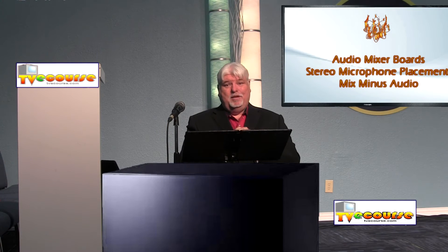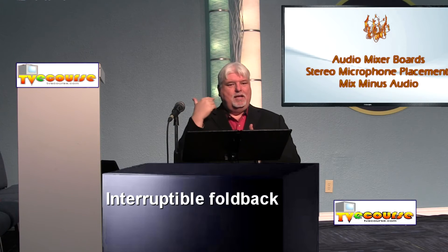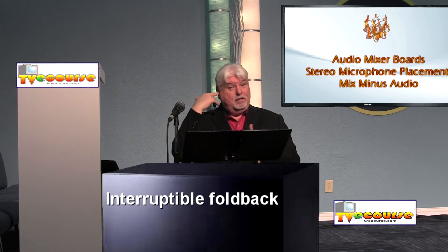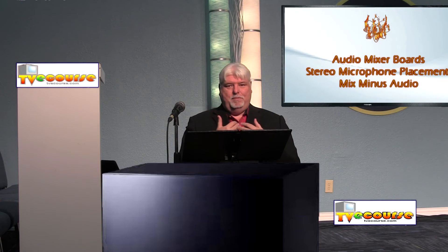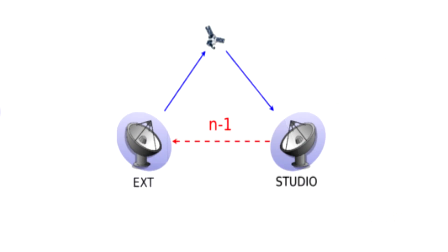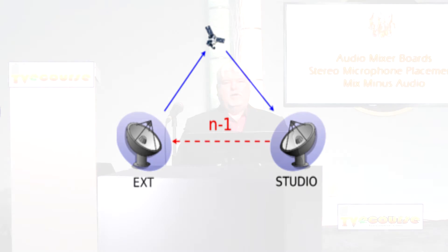Sometimes you may have an IFB system, where a talent sitting in a studio has a little headphone and they're listening to a remote signal from someone at the other end of a conversation, or the director is giving them information in their ear. They don't need to hear themselves talk — it can be very distracting. Also, if their voice goes out on a satellite and comes back again, there's a substantial delay, and hearing themselves on that delay can confuse them to the point where they can't talk. So we do a mix minus feeding to the IFB where they hear what they need to hear, but not themselves or anything that would confuse them.